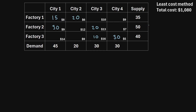When solving this type of problem, there are three methods we can use to come up with an initial basic feasible solution: the least cost method, the northwest corner method, and Vogel's approximation method. I've made videos on each of those methods and I'll link to them in the description. For this example, let's assume we used the least cost method to come up with an initial basic feasible solution.